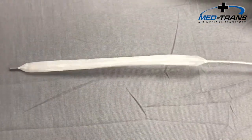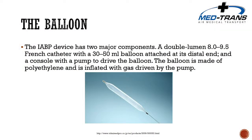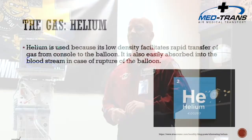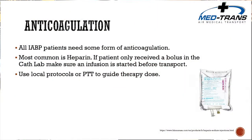The balloon is a double-lumen device, usually an 8 to 9.5 French catheter, with a 30 to 50 milliliter balloon on the distal end, plus a console that drives the balloon. It's made of polyethylene and inflated with helium — used because of its low density for rapid gas transfer, and it's easily absorbed in the bloodstream in case of rupture. The patient will also require anticoagulation, usually heparin, initiated by the cath lab or ICU, with a bolus already given and an infusion started as needed.